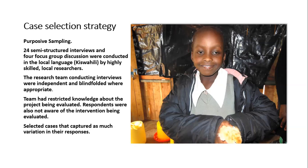The research team conducting the interviews was independent and blind-folded — meaning they were new staff with very little knowledge about the project being evaluated, and the respondents were not aware that the interventions they had been receiving were being evaluated. This was to reduce bias and ensure that girls didn't tell interviewers only what they thought they wanted to hear. Selected cases captured as much variation as possible, distributed across the different areas of the community health units.